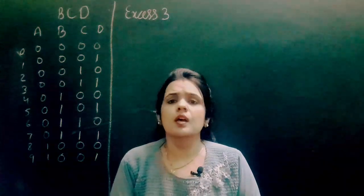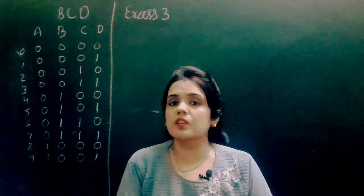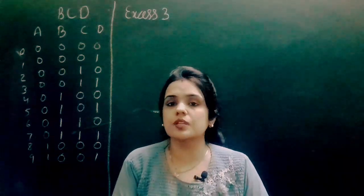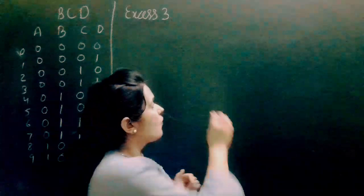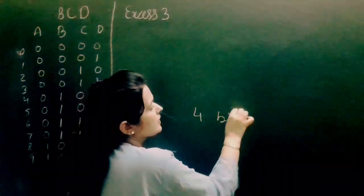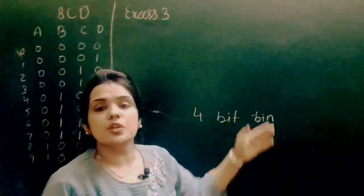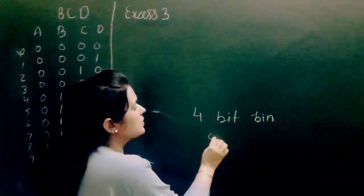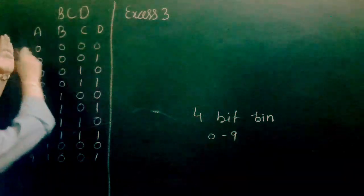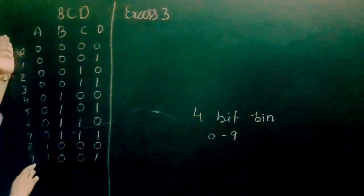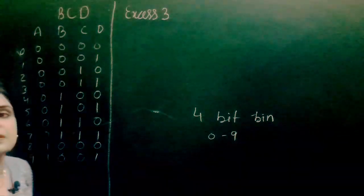Now what is BCD? BCD, as we know, stands for binary coded decimal. It is a 4-bit binary representation of a decimal digit — specifically, 4-bit binary representation of decimal digits from 0 to 9. That's why we have the BCD equivalent of 0 to 9 digits.